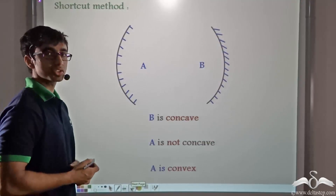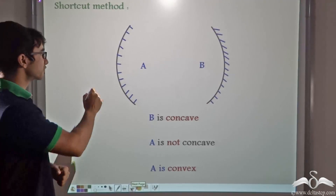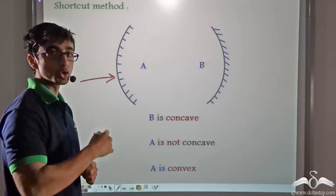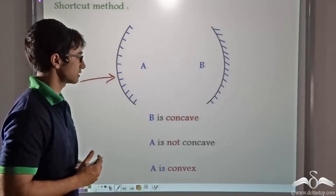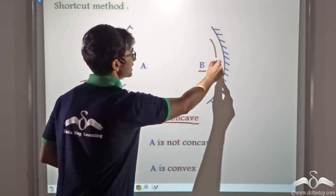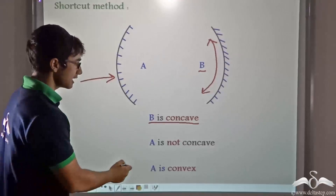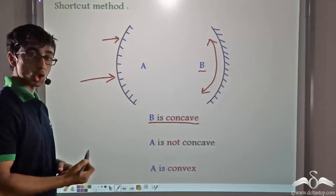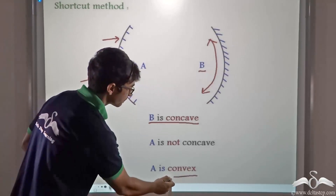Since B is concave, let us consider mirror A. When we consider mirror A, we find that the reflecting surface is not hollow like a cave — it bulges outwards. So is mirror A concave? No. Mirror A is convex. So what did we conclude? Mirror B is concave because the reflecting surface is hollow like a cave, and mirror A is convex because the reflecting surface is not hollow like a cave but bulges outwards.